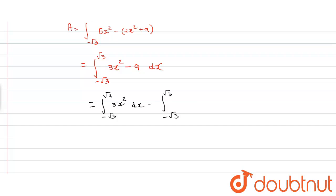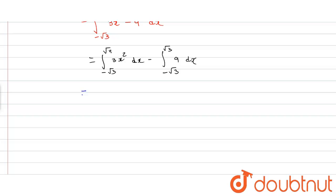By integrating, we get [3x³/3]_{-√3}^{√3} - [9x]_{-√3}^{√3}. This follows from the integration rule: ∫x^n dx = x^{n+1}/(n+1).